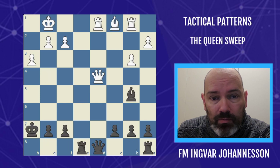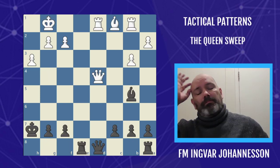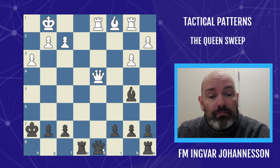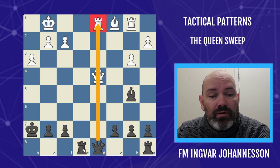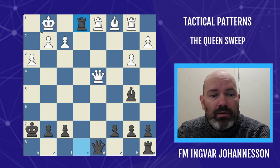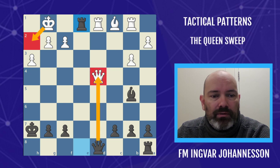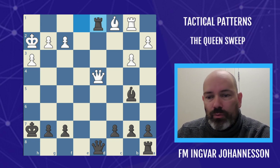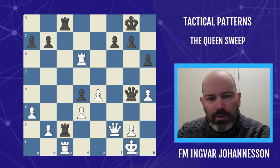Again we see an example from the black side, and here everything is lined up. We have the x-ray — there was no square for the King so you'd have to take and we take the Queen. But there is a square for the King; unfortunately there's still an x-ray, so black wins the rook.